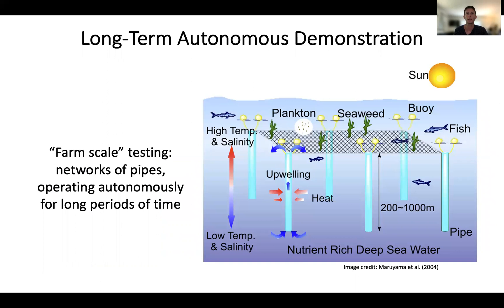Most field trials of upwelling devices have focused on a single device for a short period of time with a high degree of human supervision. But to reach gigaton-scale carbon dioxide removal, we will need advances in autonomous operations, monitoring, and maintenance that allow networks of upwelling devices to operate autonomously in the open ocean in an environmentally safe manner for long periods of time with minimal human supervision. This will require scientists and engineers working together to accelerate the technological development of these devices.